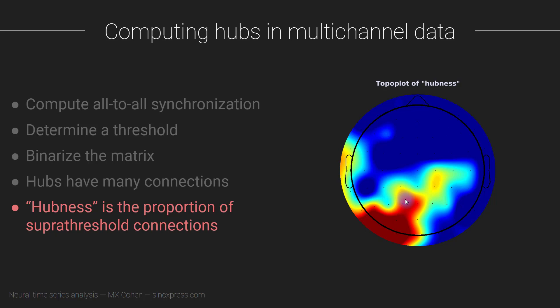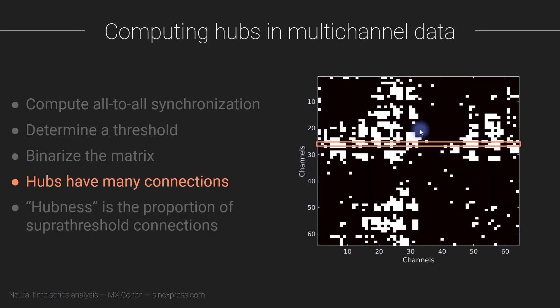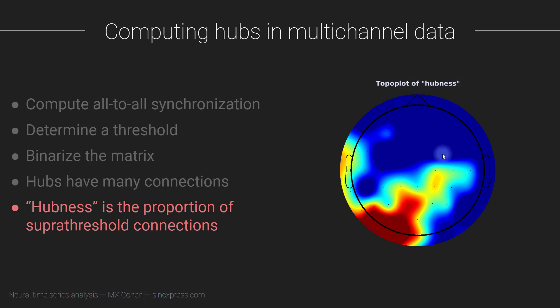What you don't see in this graph - what is hidden or embedded inside this graph that you don't visualize - is which other channels this channel is connected to. Are these local connections just around here, or long-range connections synchronized with prefrontal regions? You don't see that because we're summing over all those data points. We're just interested in the total number of connections.